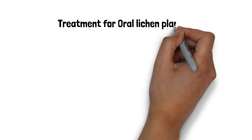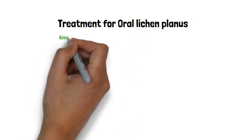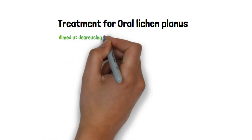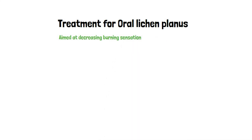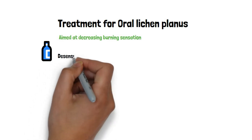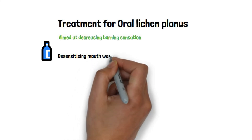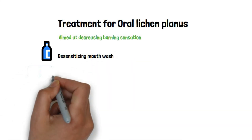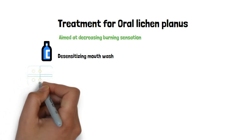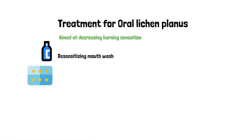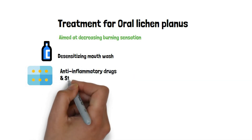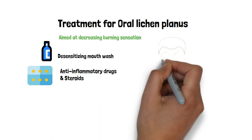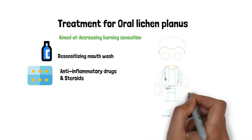Almost 90 to 95 percent of patients with oral lichen planus complain of severe burning sensation, hence the primary mode of treatment is directed towards decreasing burning sensation. Patients are advised desensitizing or anesthetic mouthwashes to reduce the burning sensation, which helps the patient in taking a good diet and ensures good nutrition supply. The treatment is also directed towards decreasing inflammatory factors, and the dentist advises various anti-inflammatory and immunity-suppressing drugs like steroids.